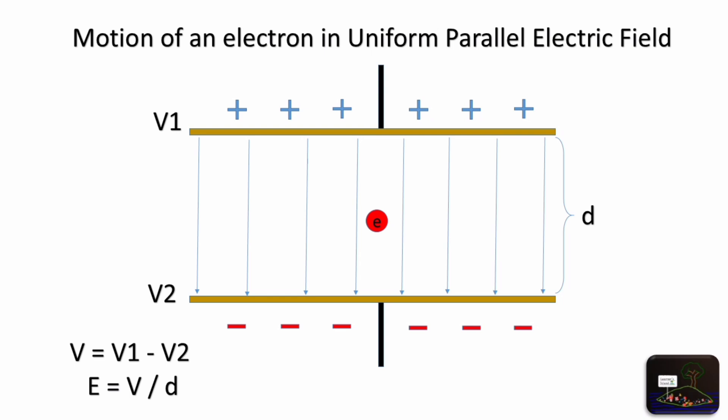The potential difference between the plates will be V, which equals V1 minus V2, and thus the electric field will be E equal to V by d.